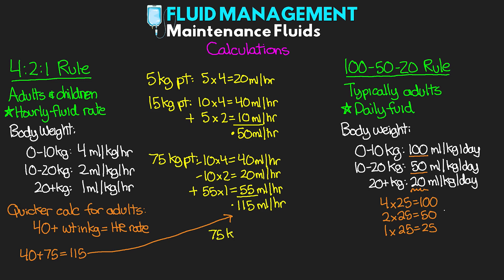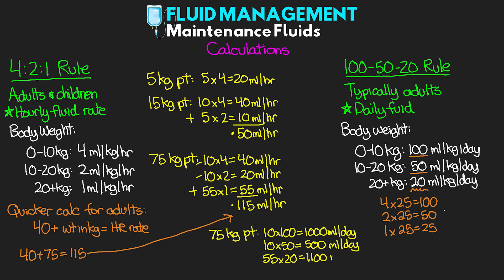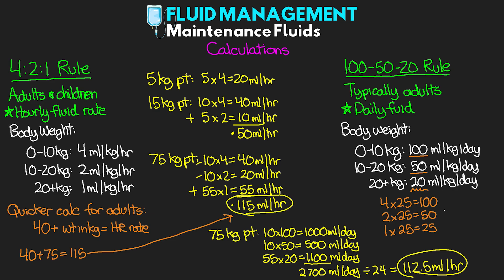Let's apply the 100-50-20 rule to a 75 kg patient. First 10 kg × 100 mL/kg/day = 1,000 mL/day. Next 10 kg × 50 mL/kg/day = 500 mL/day. Remaining 55 kg × 20 mL/kg/day = 1,100 mL/day. Total: 2,700 mL/day, or dividing by 24, that's 112.5 mL/hour — very close to the 4-2-1 result of 115 mL/hour. These two calculations are quite similar.